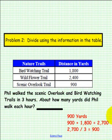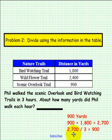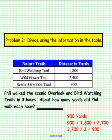Here is what we have as an answer: 900 yards. 900 plus 1,800 equals 2,700. 2,700 yards divided by 3 equals 900. If your answer matches ours, that is truly fantastic.